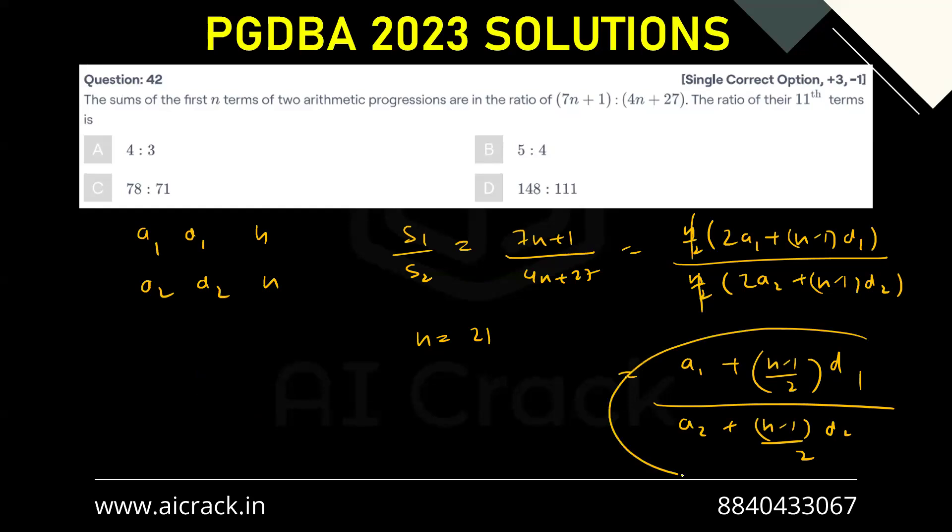So all we need to do is replace n with 21. And since this is same as this, we just have to replace n equals 21 over here. So we will be getting 7 into 21 plus 1 divided by 4 into 21 plus 27. That comes out as 148 divided by 111.